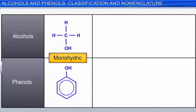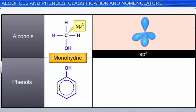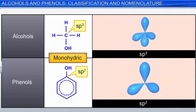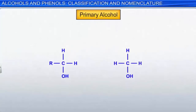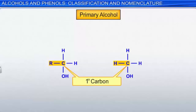Monohydric alcohols can be classified on the basis of the nature of the carbon atom attached to the hydroxyl group. These carbons are either sp3 or sp2 hybridized. We will first consider hydroxyl groups attached to sp3 hybridized carbons. In a primary alcohol, the carbon attached to the hydroxyl group is linked to one other carbon-containing group, or to none, as shown in the illustration.